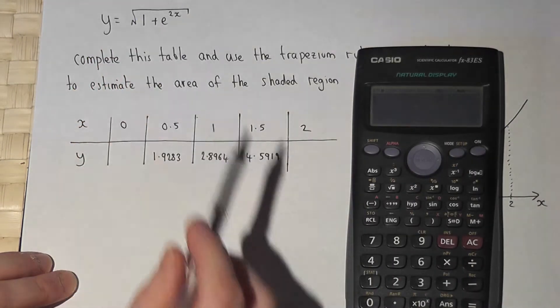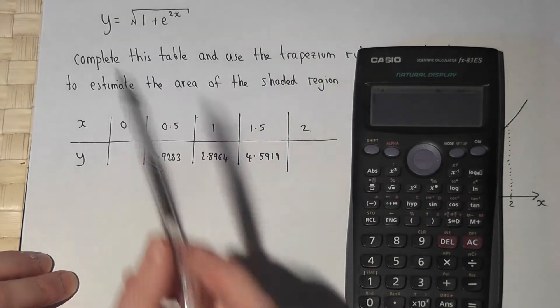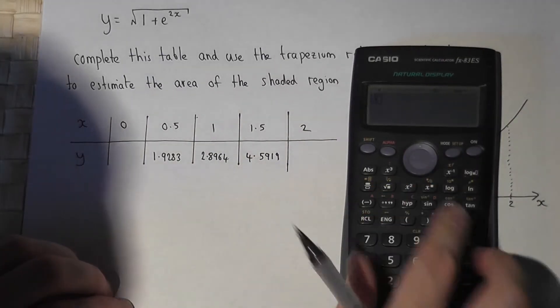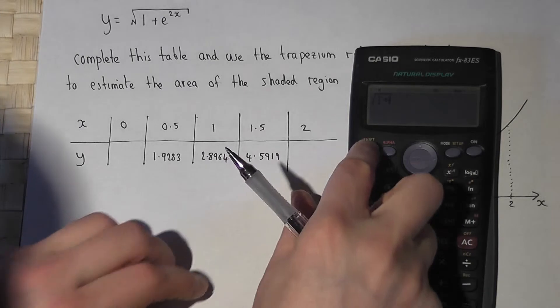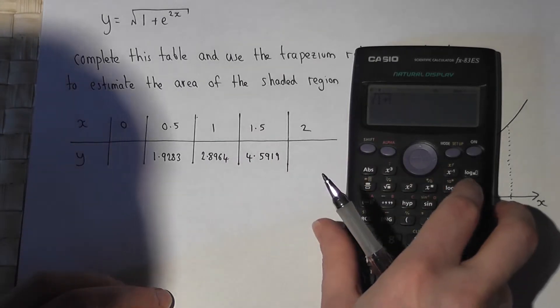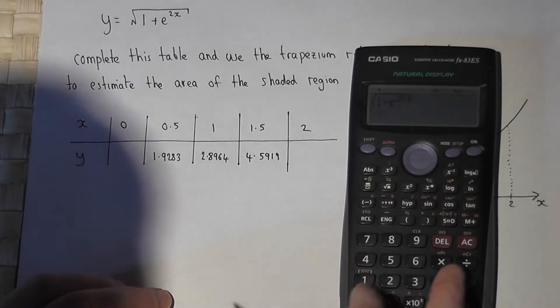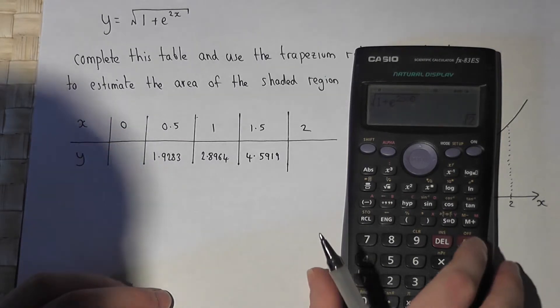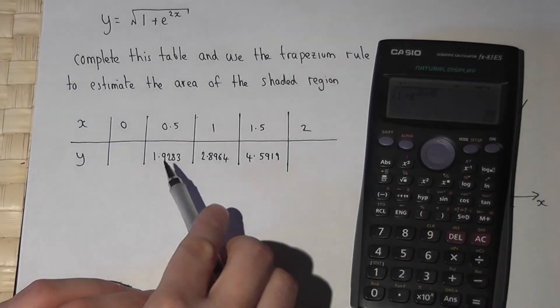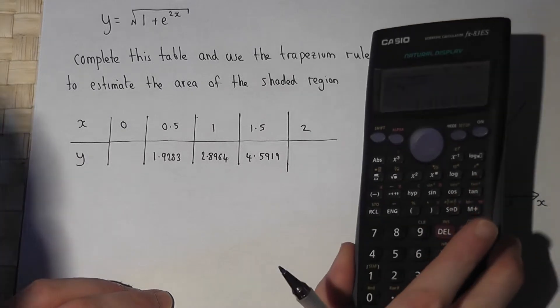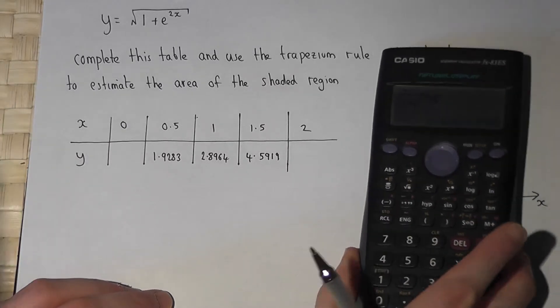So if I let x equals 0 first in that function, it's the square root of 1 plus shift ln to the power of 2 times 0, and press enter. I get root 2. I'll work to the same order of accuracy, so 1.4142.